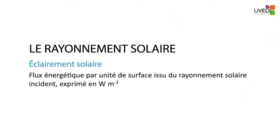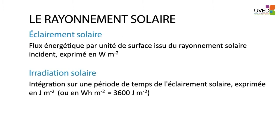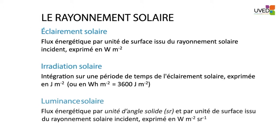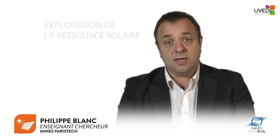Before we start talking about the solar resource characterization, I'd like to give you a few definitions. We'll talk about solar illumination, i.e., the energy flow expressed by a surface unit of solar radiation — not to be confused with incident radiation, the solar illumination for a given surface during a given time. One second of illumination is one joule per square meter. We can also express solar radiation in watts per hour per square meter.